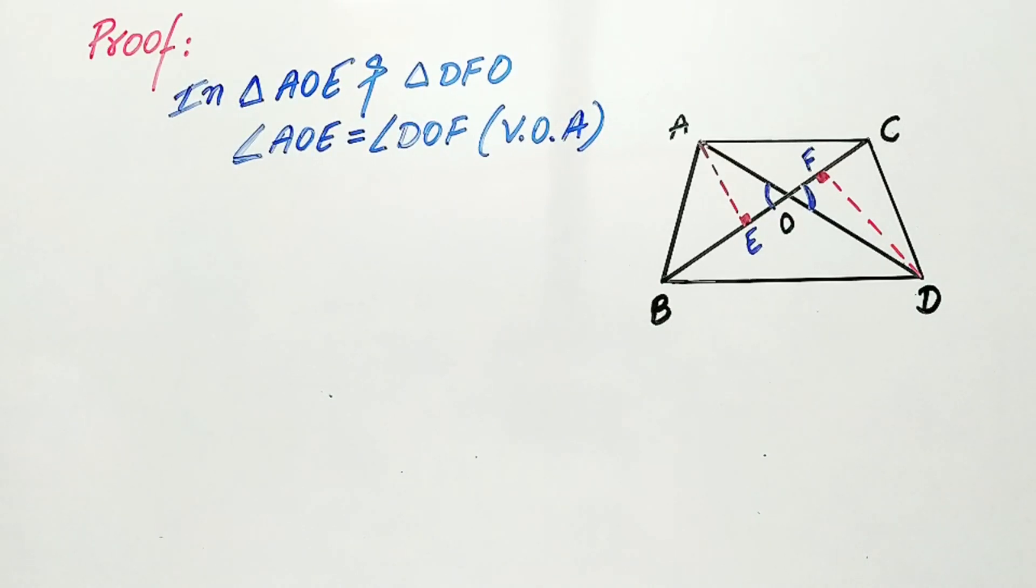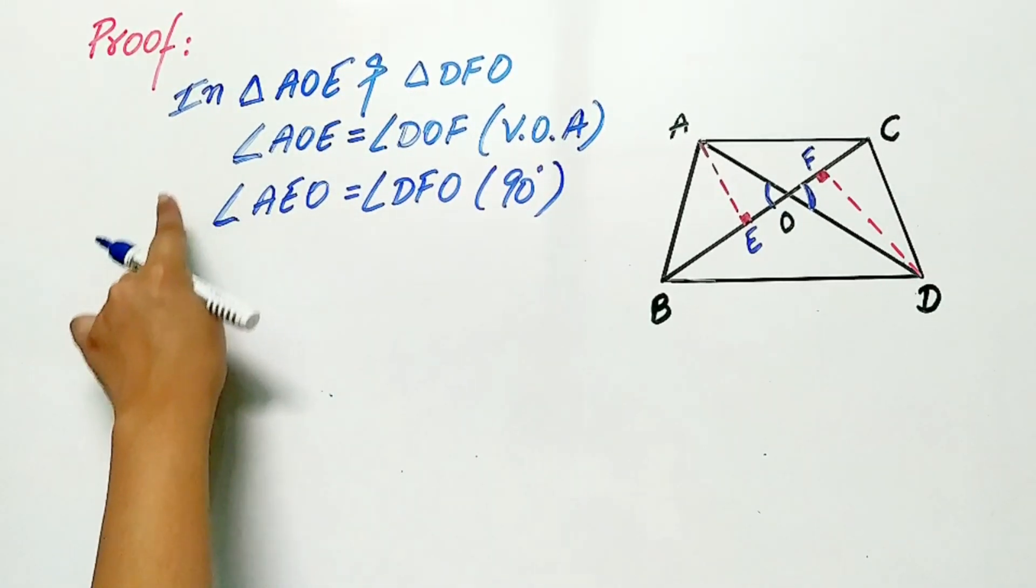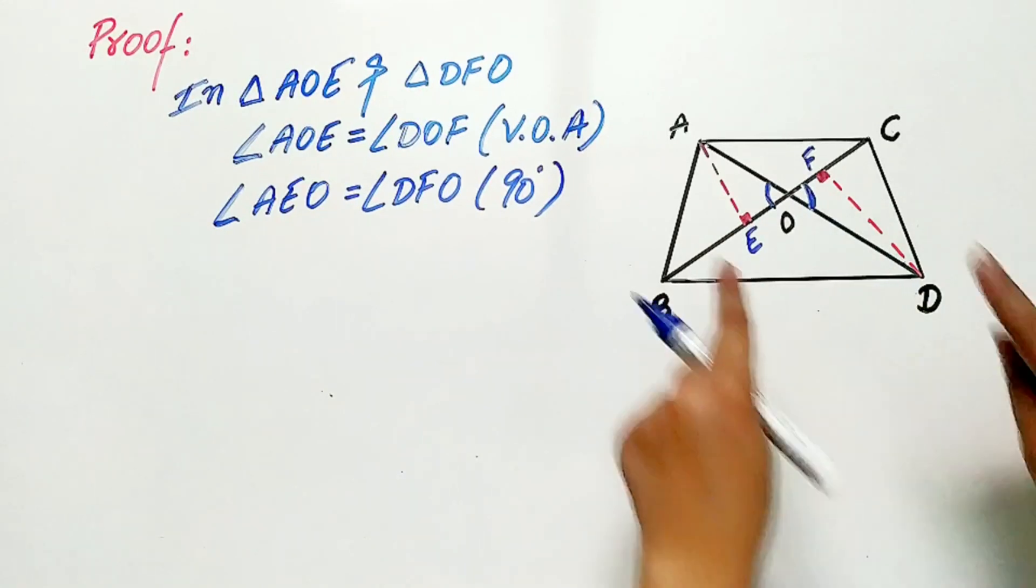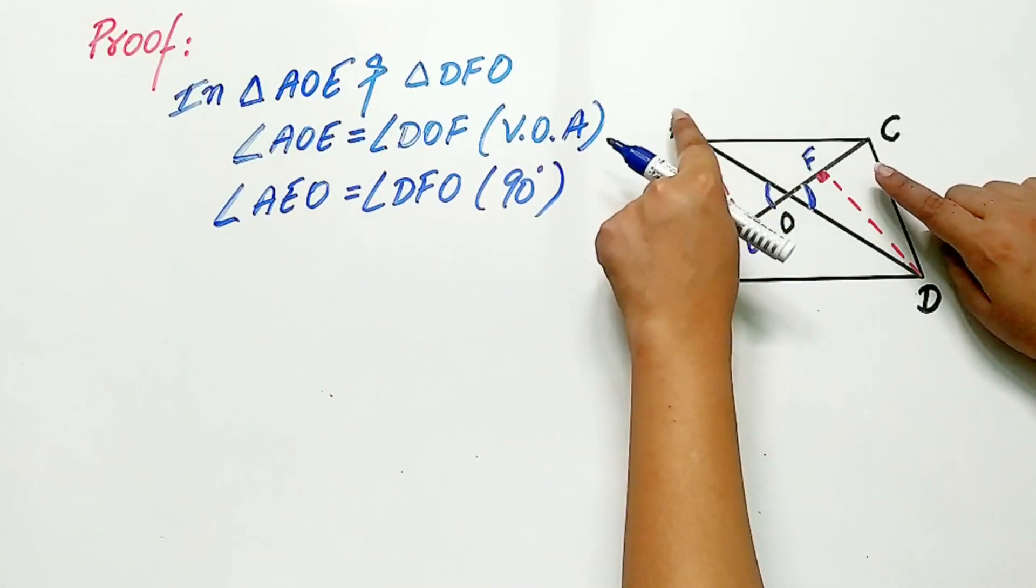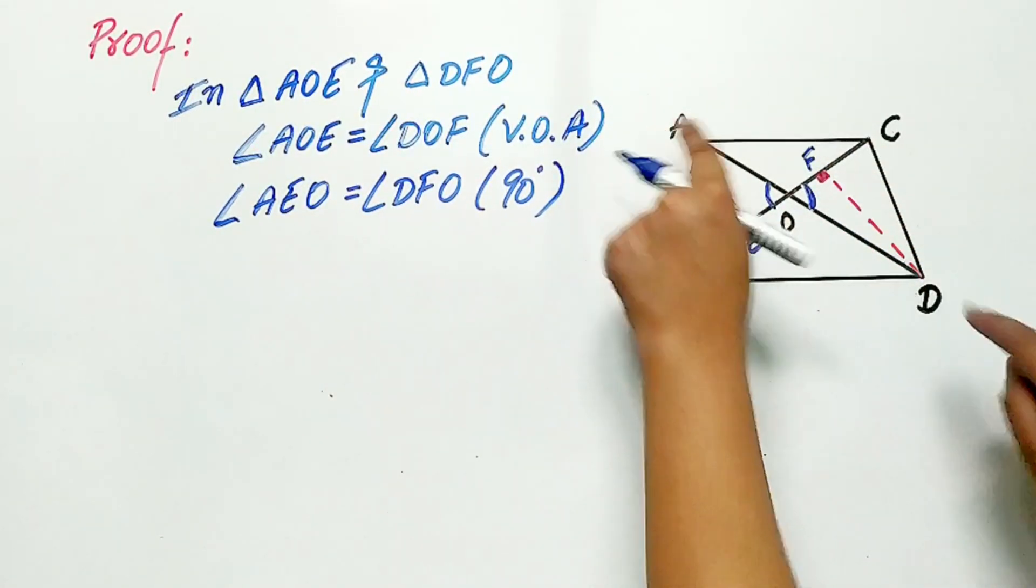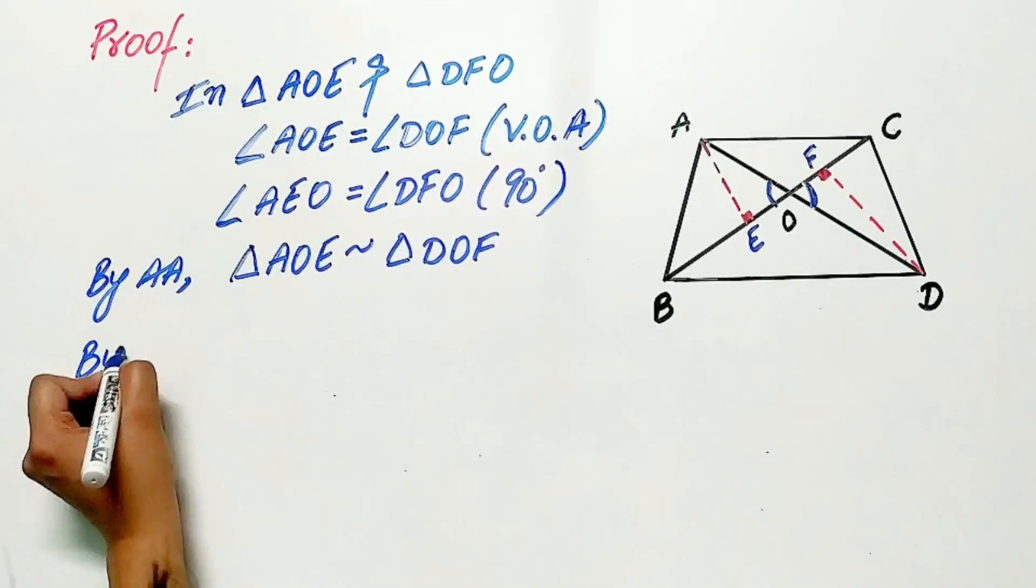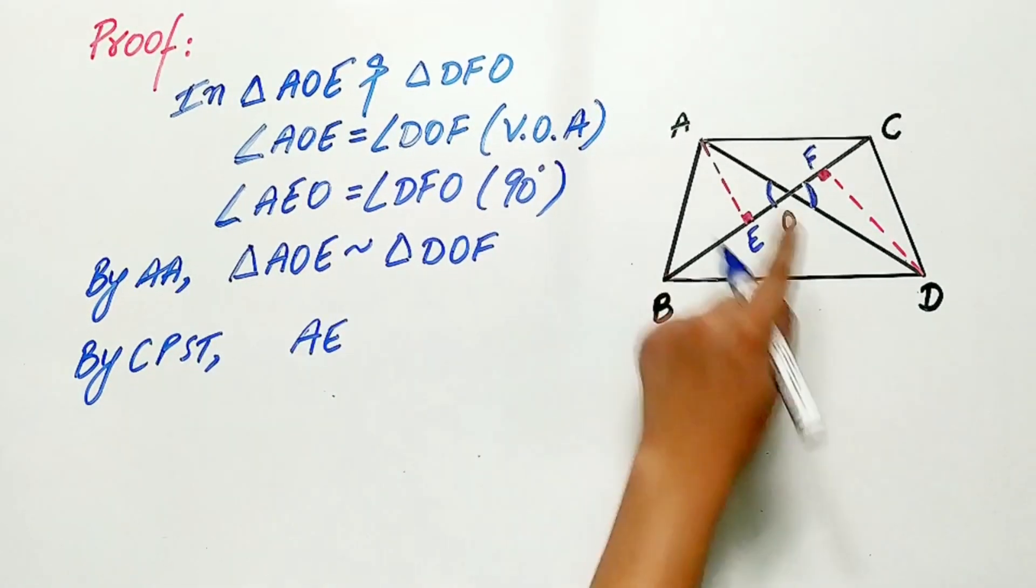Hence, by AA, both these triangles, that is AOE and DFO, are similar. And by CPST, AE by DF is equal to AO by DO.